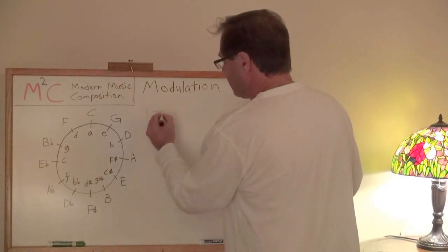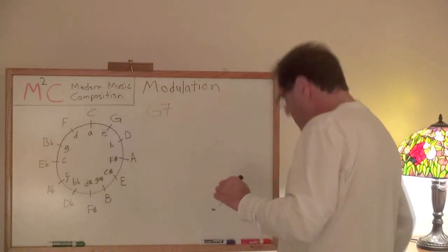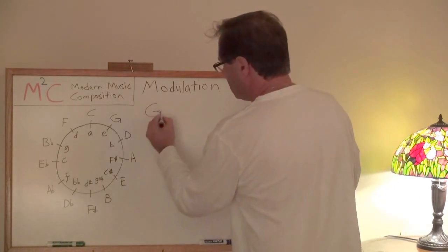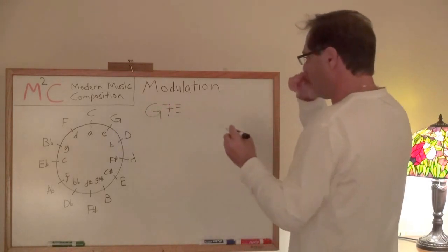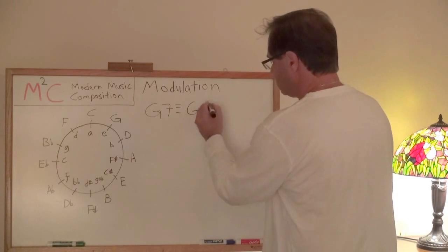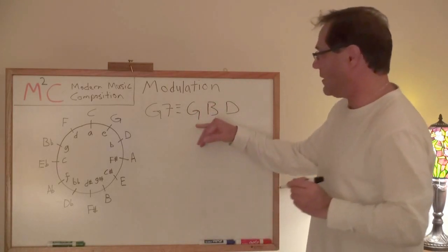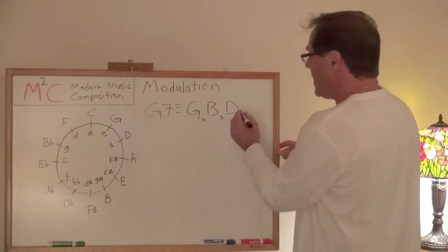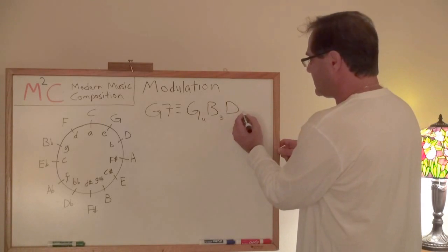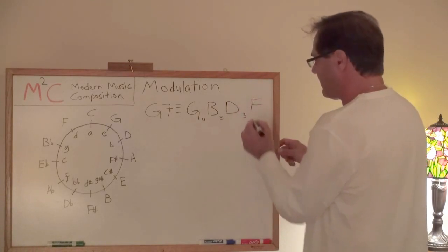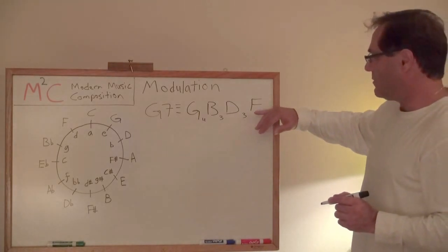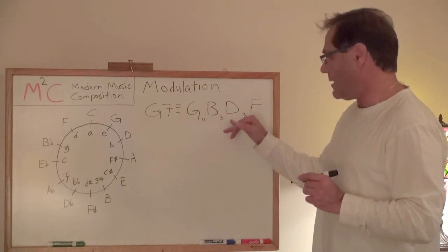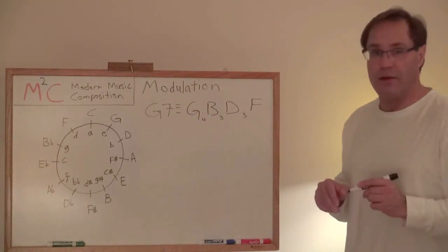Let's take G seventh. First of all we need to define a dominant seventh chord. G seventh is defined as: you first take your major triad where you've got four semitones here and three semitones here, and then you build this out, you build this D out, another three semitones and that gets you to an F. So that's what defines a dominant seventh chord: a major triad plus a minor third.